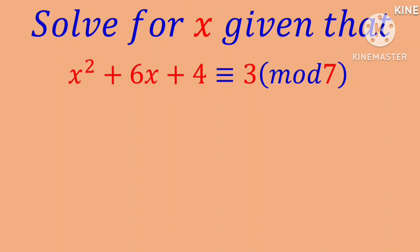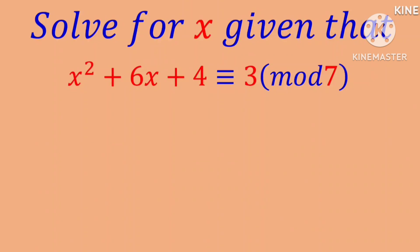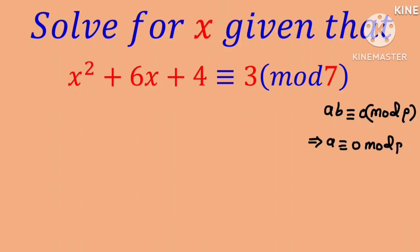Before I get into the lesson, it is important we know this theorem: if a and b are two integers such that the product ab is congruent to zero in mod p, where p is a prime number, then a must be congruent to zero in mod p, or b must be congruent to zero in mod p.